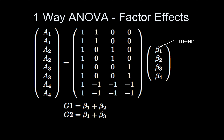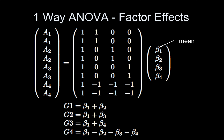For group three, it's going to be beta one plus beta four. Group four looks really weird: it's 1 minus 1 minus 1 minus 1, which gives beta one minus beta two minus beta three minus beta four. Group four didn't have its own regressor in the model because it would be over-parameterized. If you have an overall mean in the model, and you know the means of three of the groups, you can derive the mean for the fourth group — it's like knowing two numbers sum to ten and one is two, so the other must be eight.